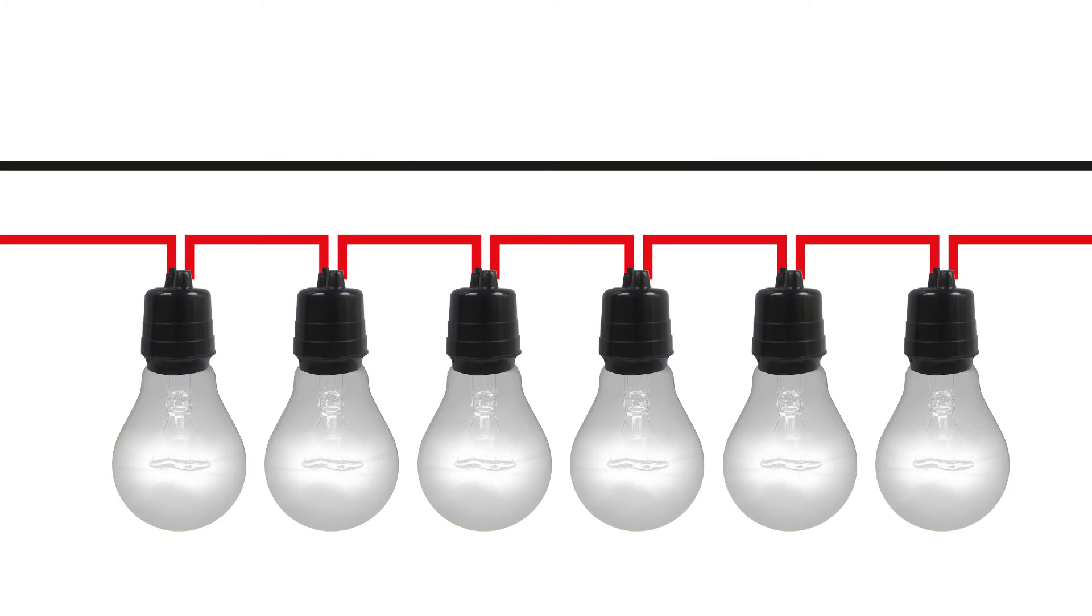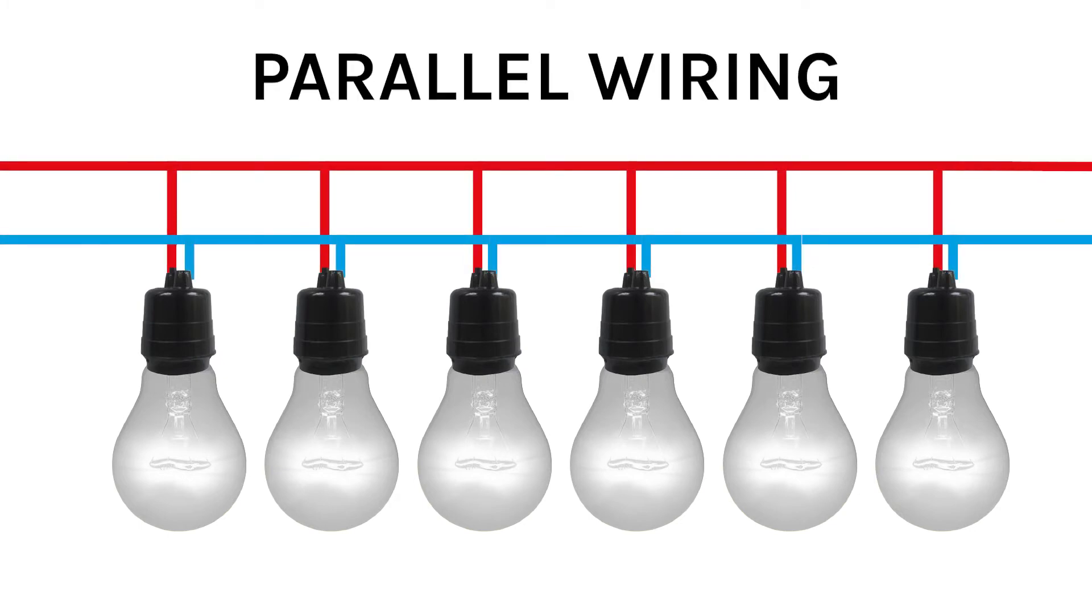The solution is called parallel wiring. With parallel wiring, you're using more copper, but you're creating a different circuit that goes to every single bulb. Using parallel wiring is more expensive. It takes more engineering, but it makes the whole design a whole lot more flexible.